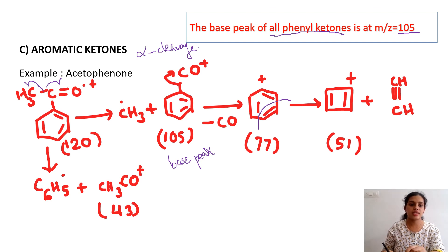Another possibility of this alpha cleavage is removal of this benzene ring as a radical to give CH3CO+ as the positive fragment with m/z value equal to 43. It is all about the fragmentation of ketones. Thanks for listening to me.